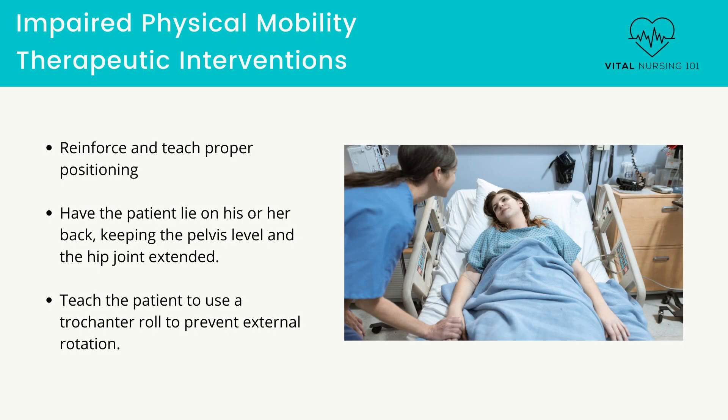Therapeutic interventions: Reinforce and teach proper positioning. Patients often develop contractures of the affected extremity, which complicates rehabilitation and the use of a prosthesis. Have the patient lie on his or her back, keeping the pelvis level and the hip joint extended. This positioning prevents flexion or abduction contractures. The patient should avoid the use of pillows under the residual limb.